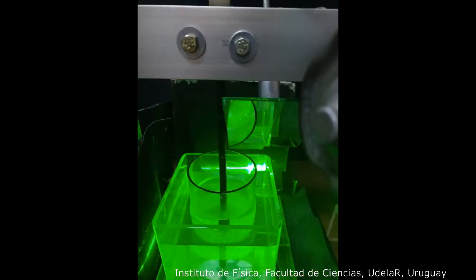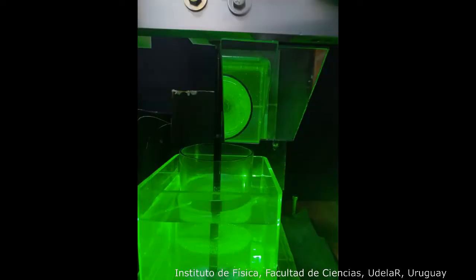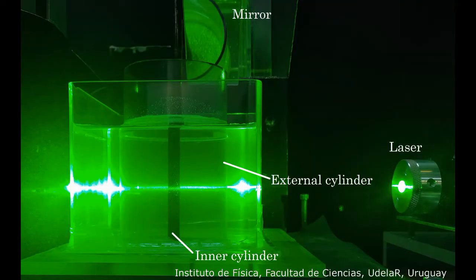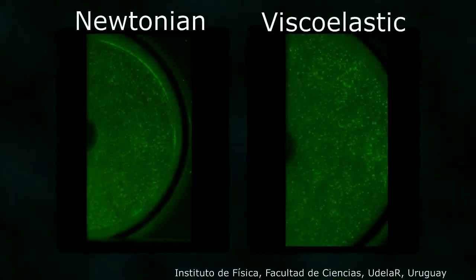To show you their strange properties we perform a simple experiment that consists of two concentric cylinders with fluid between them. The inner cylinder abruptly starts rotating and we recorded the fluid motion with the help of a camera. We added tiny particles to the fluid and illuminate them with a green laser to record their motion.